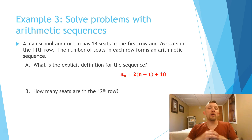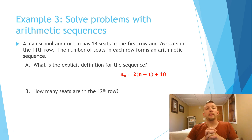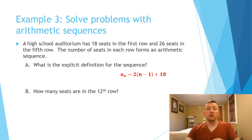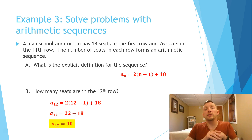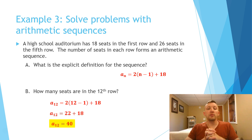If they also asked how many seats are in the 12th row, we take that formula and put 12 in for n. So 12 minus 1 is 11, times 2 is 22, and 22 plus 18 is 40. So there are 40 seats in the 12th row of that auditorium.